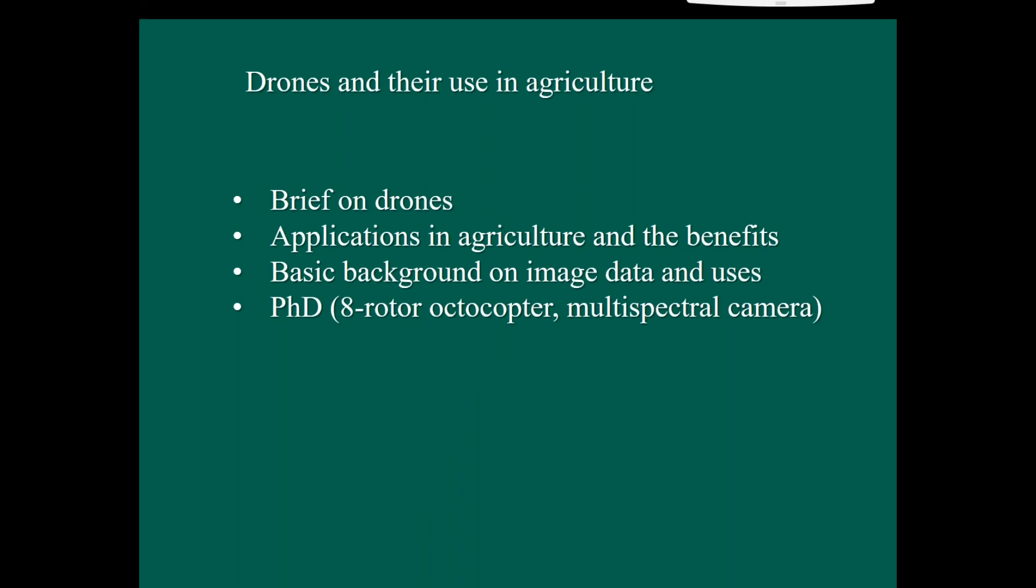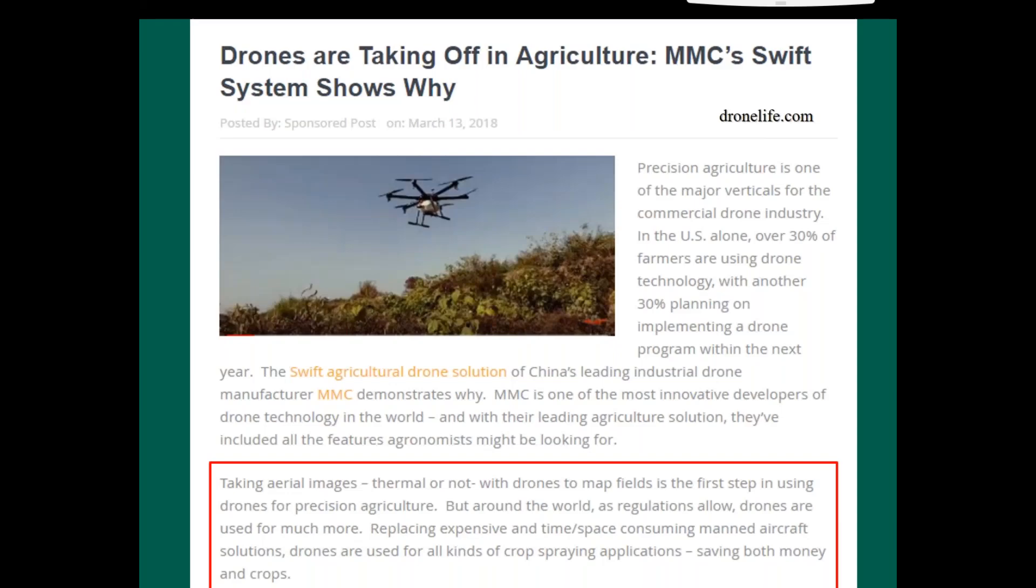So I talked a little bit about drones and their application in agriculture, at least the more common ones, and some background on image data and how we use it, some of the problems with it, and some of the benefits, and then just one study that I did. And I'll just end with an article from last month in Drone Life, where they're saying taking aerial images, thermal or not, which is referring to infrared sensors, with drones to map fields is the first step in using drones for precision agriculture. But around the world, as regulations allow, drones are used for much more, replacing expensive and time-consuming manned aircraft solutions. Drones are used for all kinds of crop spraying applications, saving both money and crops. So I think it'll be really interesting to see this take off in broadacre agriculture, where if we can detect something well enough, if it was a pest or a disease, and then a drone could actually go and target that, that would be pretty amazing.